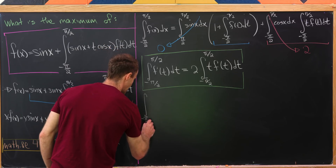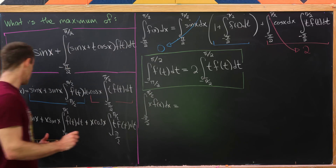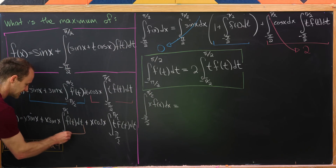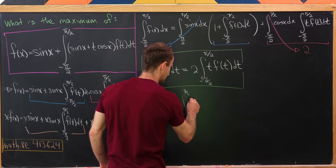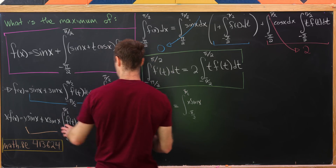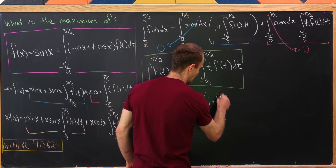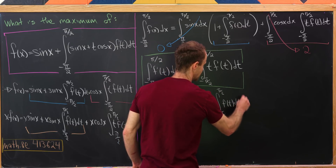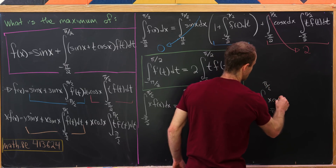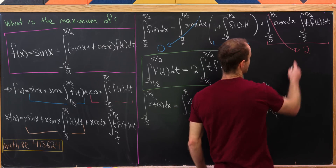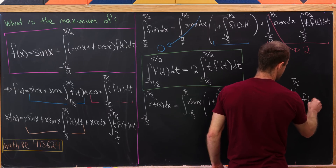Integrating from minus π/2 to π/2 gives us the integral of x·f(x) dx equals the integral of x·sin(x) times 1 plus the integral of f(t) dt, plus the integral of x·cos(x) dx times the integral of t·f(t) dt. The integral of x·sin(x) over this region equals 2 — that's a straightforward integration by parts. And the integral of x·cos(x) equals 0 since x is odd, cosine is even, and we're on a symmetric domain.